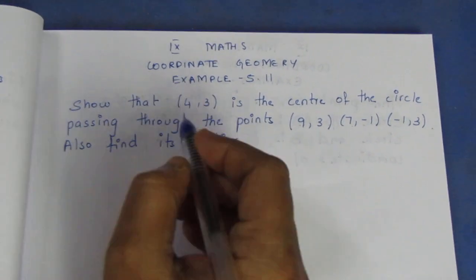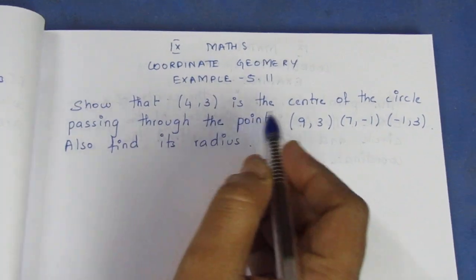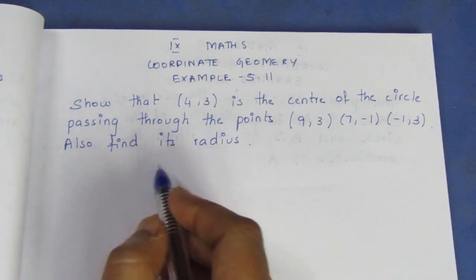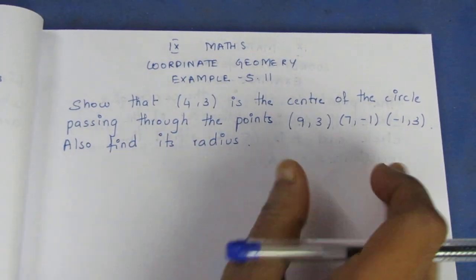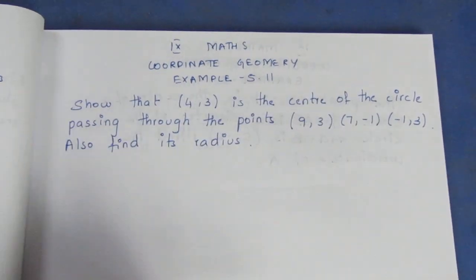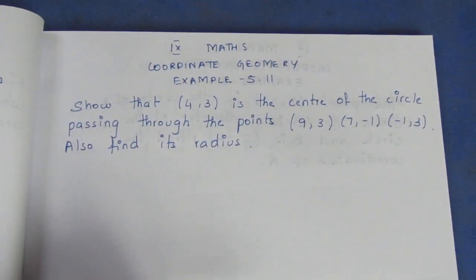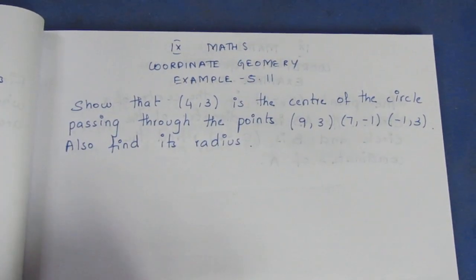Show that (4,3) is the center of a circle passing through the given 3 points. Also, find its radius.